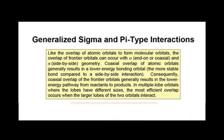Frontier orbitals can come together in the same way that atomic orbitals can come together. They can come together in a collinear fashion, a coaxial fashion, a sigma-type interaction, or they can come together in a side-by-side fashion, a pi-type interaction. Let's take a look at some examples.